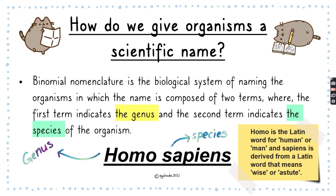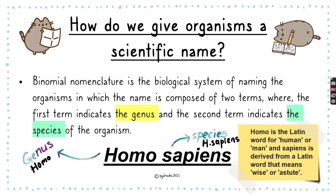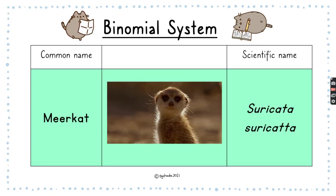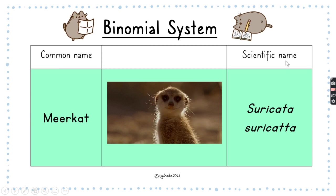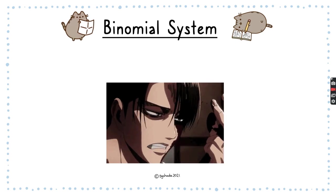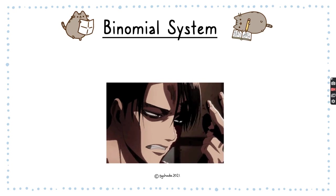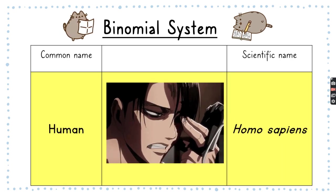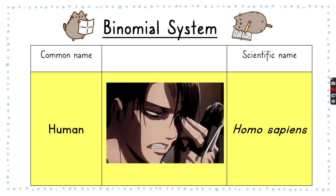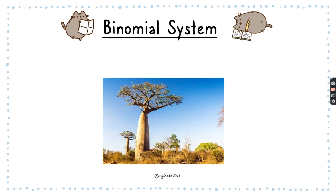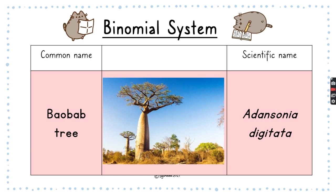Let's look at the binomial system in action. A meerkat's scientific name is Suricata suricata — meerkat is the common name, just like 'humans' is our common name but we are Homo sapiens. What about this character here? He is human, so his scientific name would be Homo sapiens. This right here is the baobab tree, and its scientific name is Adansonia digitata.